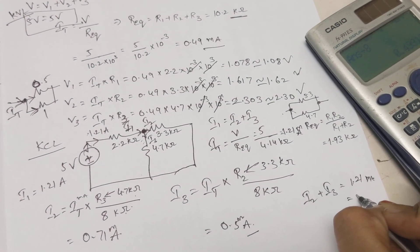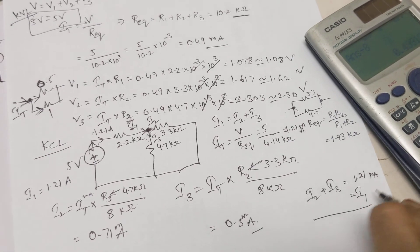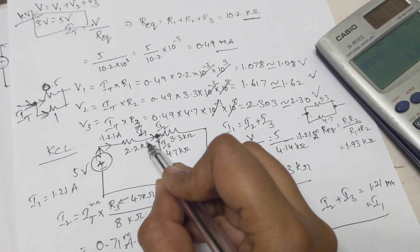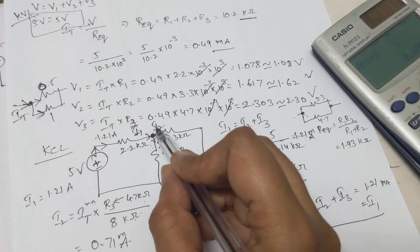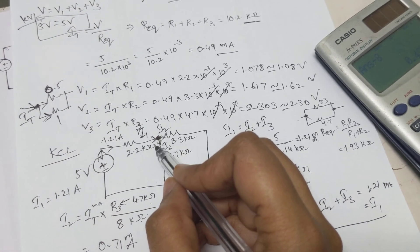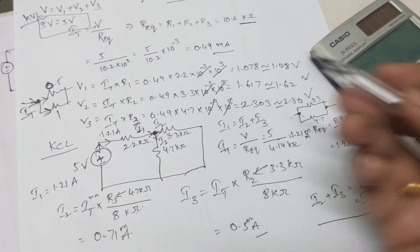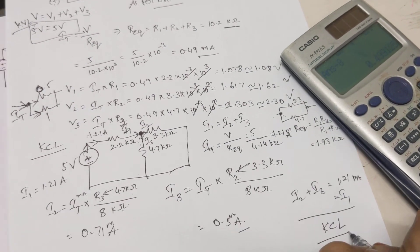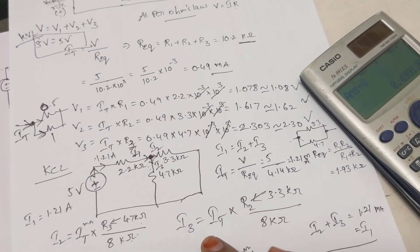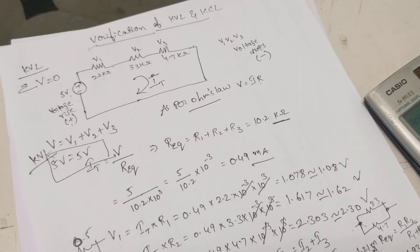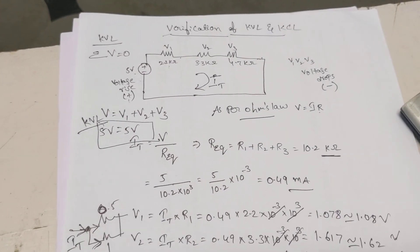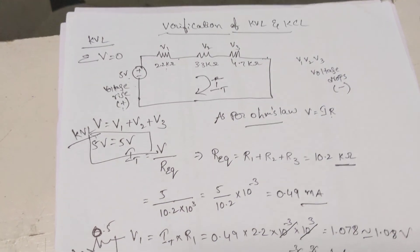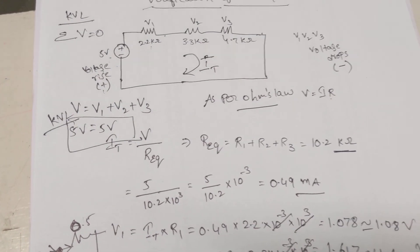The summation of I2 and I3 = 0.71 + 0.50 = 1.21 milli amperes, which equals I1. At this node the incoming current is I1 and the leaving currents are I2 and I3, so I1 = I2 + I3. With this, I can say that KCL is verified for the given circuit. I hope this theoretical calculation is helpful for understanding KVL and KCL in a better way. Thank you.